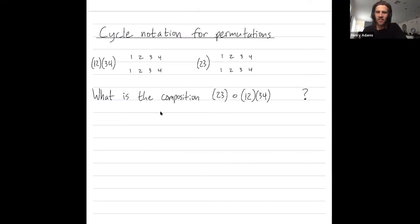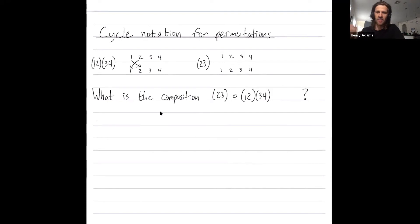Welcome folks. I want to give an introduction to cycle notation for permutations. I'm looking at S4, the symmetric group on four elements, and I have a permutation that swaps one and two and swaps three and four.